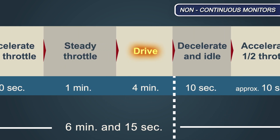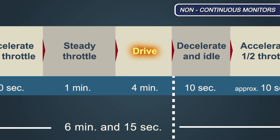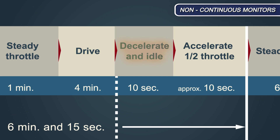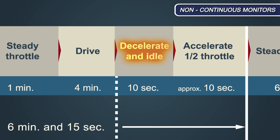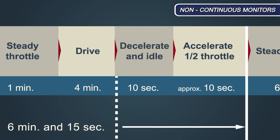This is followed by a four minute drive between 30 and 70 kilometres per hour or 20 to 45 miles per hour. The vehicle is then allowed to decelerate to a stop with minimal use of the brake and then allowed to idle for a period of at least 10 seconds.